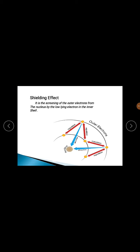Students, today we have learned about the shielding effect. The shielding effect is an effect in which the force of attraction between the nucleus and the outermost electrons is reduced and weakened. The reason is that the inner electrons are negatively charged and the outer electrons are also negatively charged. Since they carry the same charge, they repel each other.